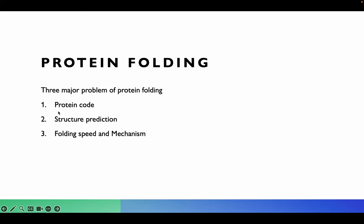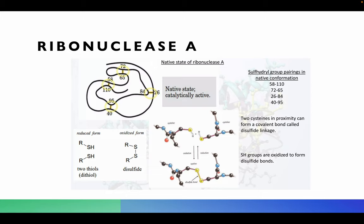How does the protein code decide the structure of the protein? We still don't know whether the folding of the protein is random or whether there is structural information that the protein provides for folding. We also don't fully understand the folding speed and mechanism. We know there are different proteins which help in protein folding, but we still don't know the exact mechanism.